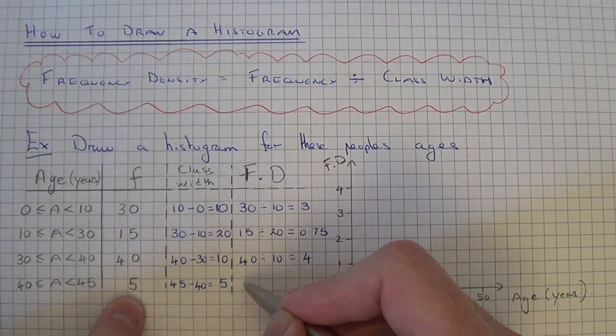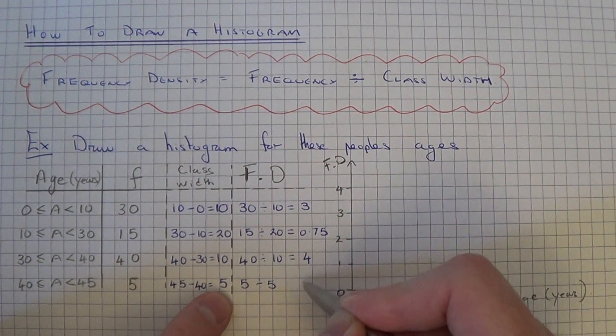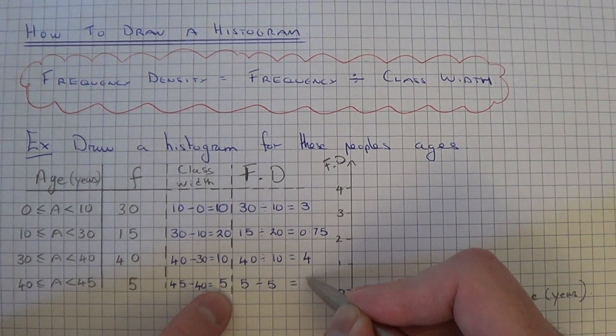And for the final group, it will be 5 divided by 5, which is 1.